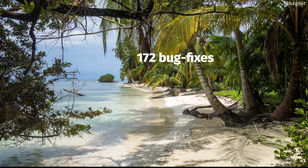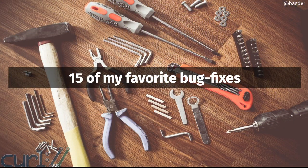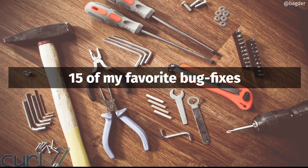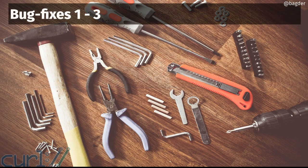We managed to cram in an amazing number of bug fixes this release cycle — 172, I counted them, maybe 173. It doesn't matter, a lot of them. I decided to just highlight 15 of my favorites — ones that could use some explanation or that I just wanted to point out. If you want to read all of them, go to the changelog on the curl website where most changes have links to their particular issues or pull requests.